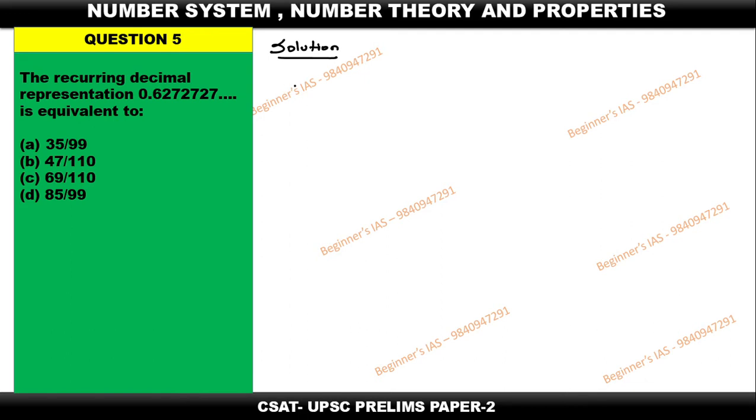We need to identify the equivalent fraction. How to identify that? Listen carefully: 0.6272727 dot dot dot. So that 27 is recurring. This can be written as 0.627 bar. So how to convert this? Listen carefully.